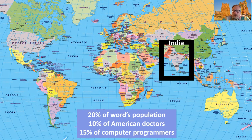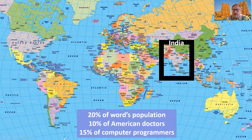20% of the world's population is currently in India and that population is growing — 10% of American doctors, 15% of our computer programmers. India is the pink area in the subcontinent of Asia, right next door to China. They share a small border, making them the world's two most populous nations. Together their populations make up almost half of the entire world's population — well over 40% just from those two nations.